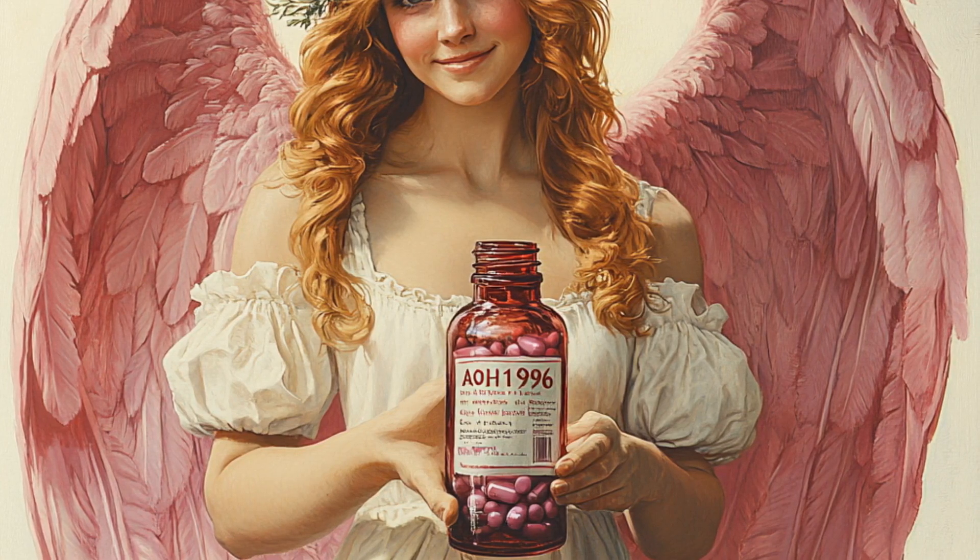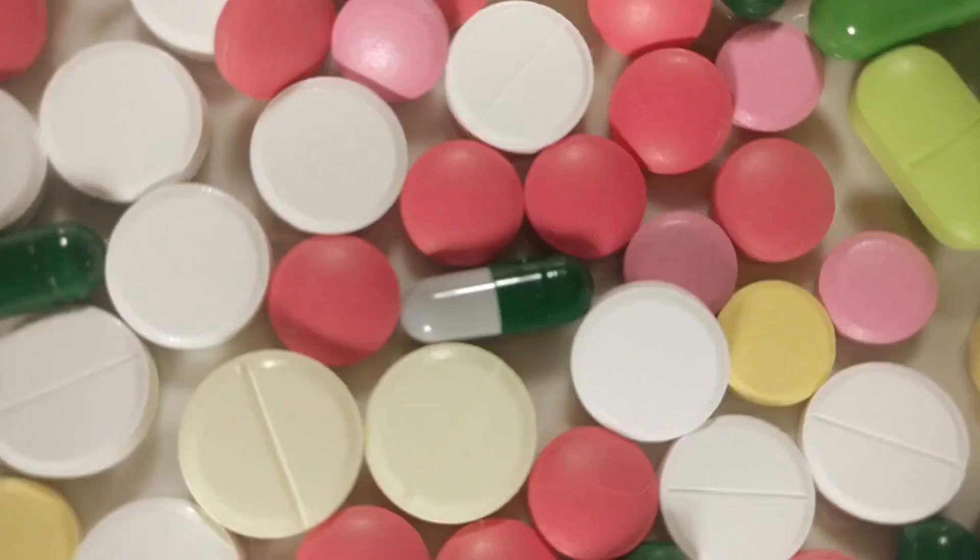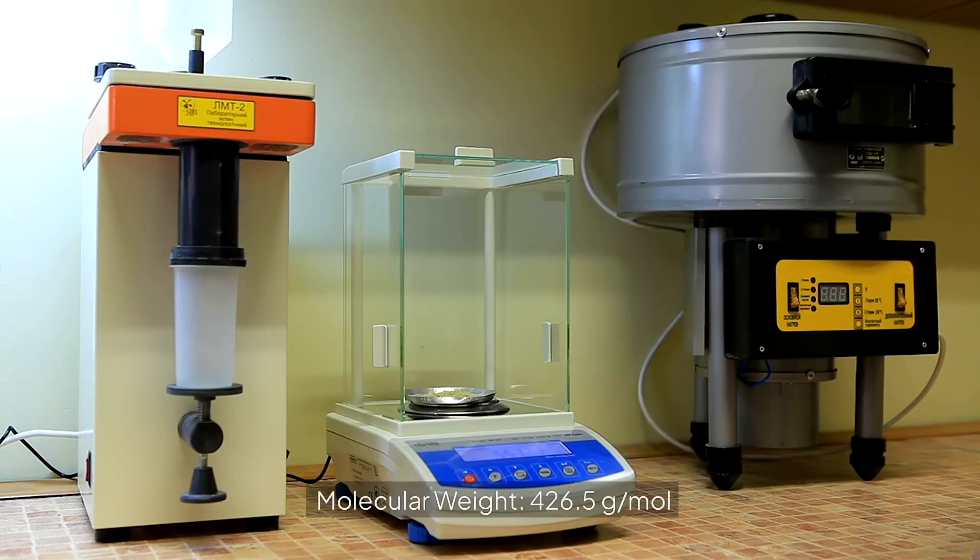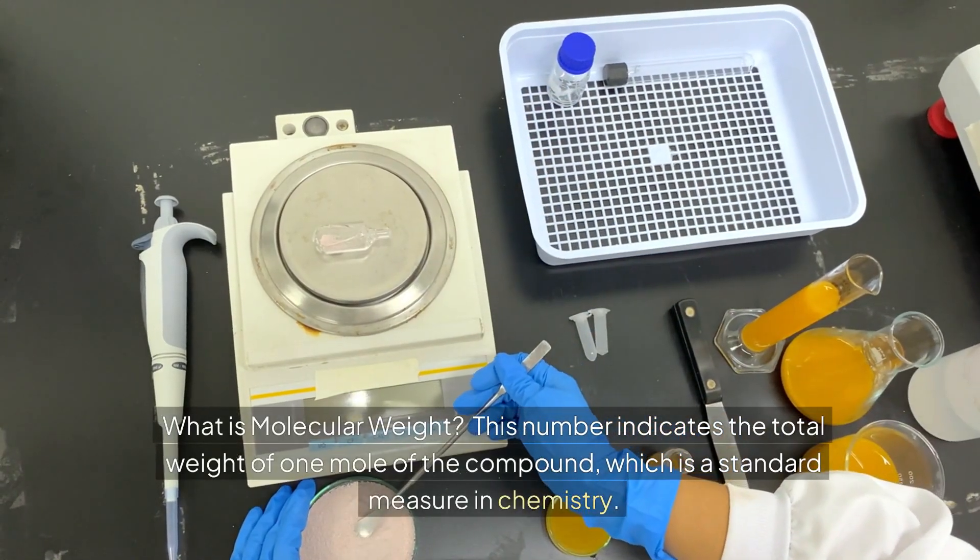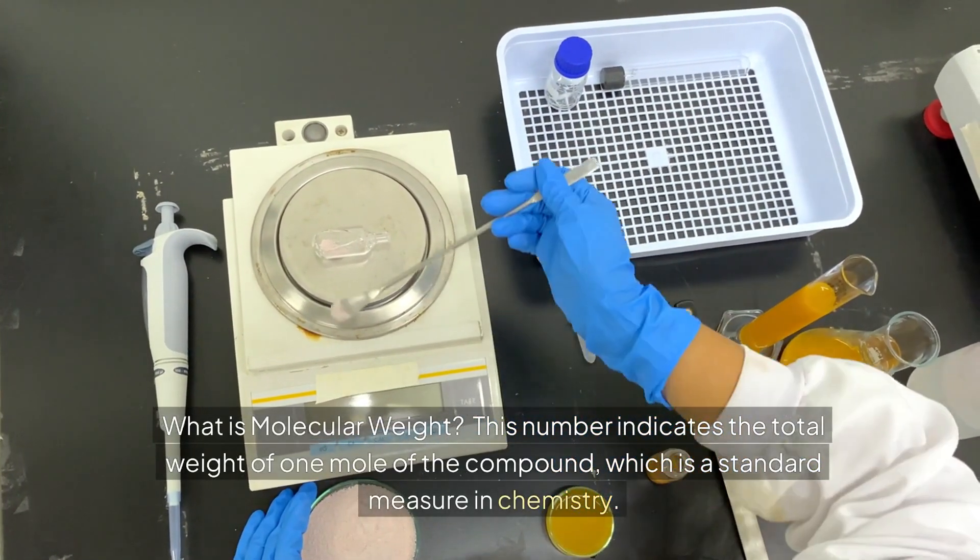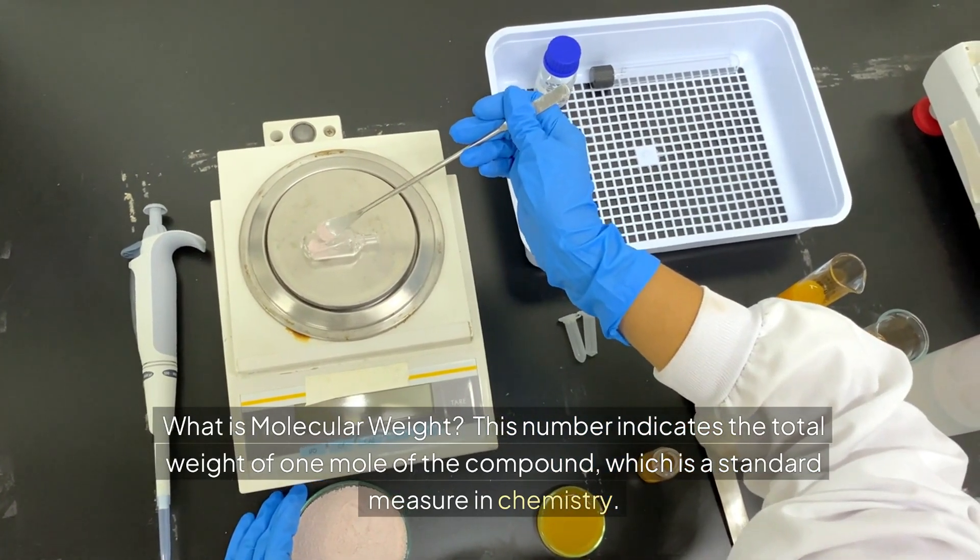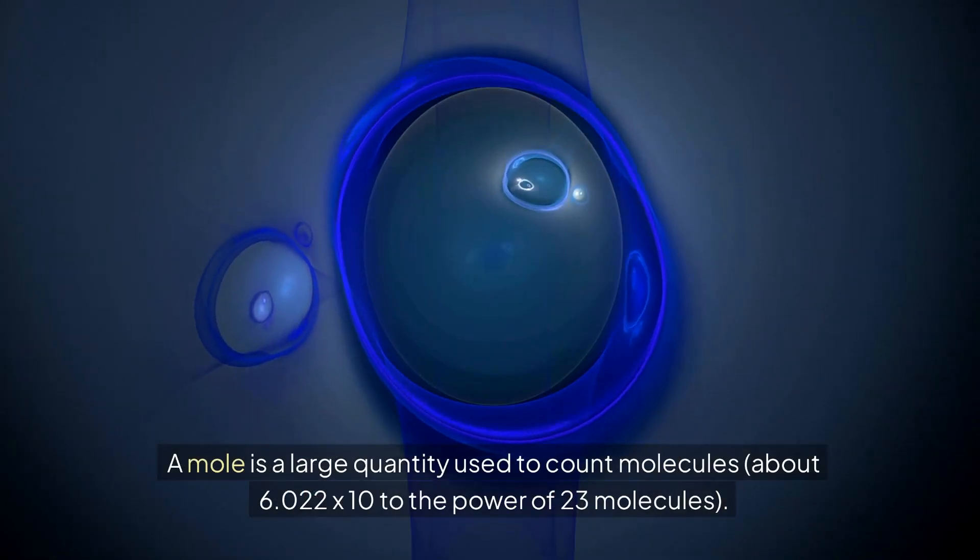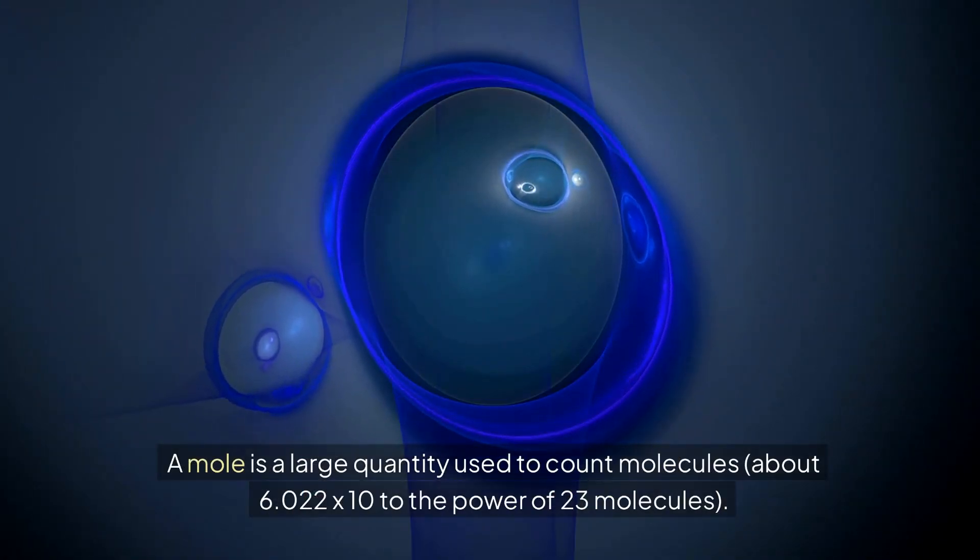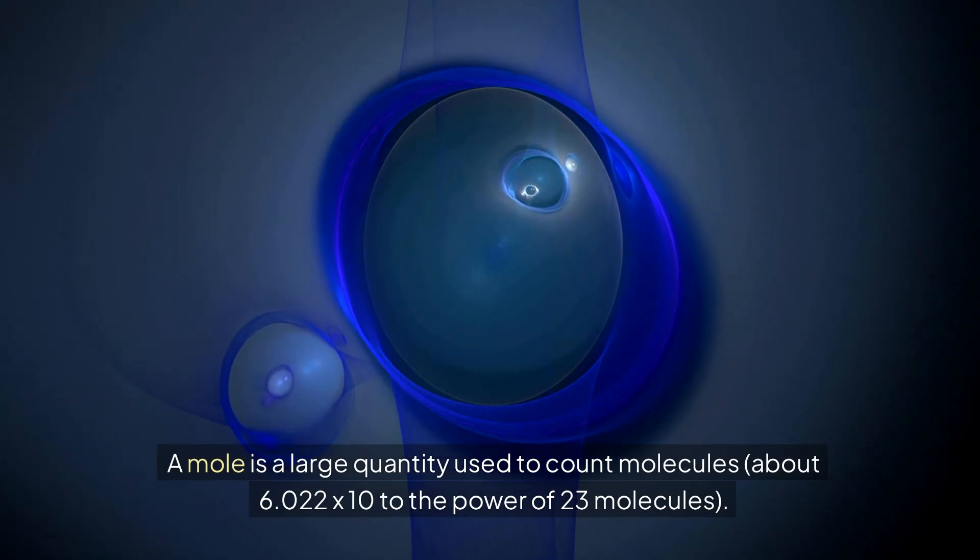Key detail 2: Molecular weight 426.5 grams per mole. What is molecular weight? This number indicates the total weight of one mole of the compound, which is a standard measure in chemistry. A mole is a large quantity used to count molecules—about 6.022 × 10^23 molecules.